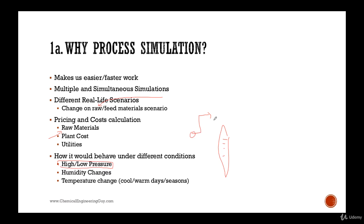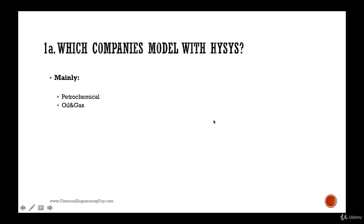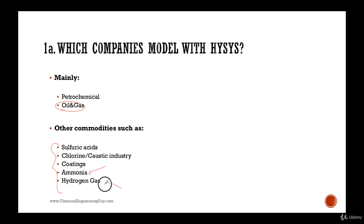Which companies model with HYSYS, and especially which companies use crude oils? Of course the petrochemical companies and oil and gas companies. There are plenty of other companies which will be using Aspen HYSYS - ammonia, hydrogen gas, maybe more fine chemistry - but I will say definitely these two are the main scope of this course. You will take advantage the most if you are already in the petrochemical and oil and gas company.